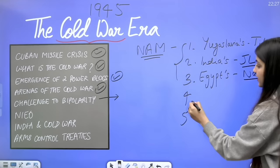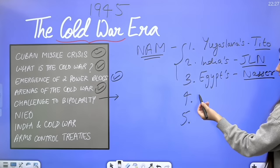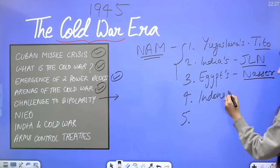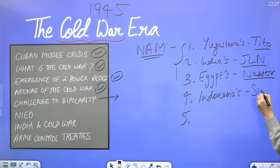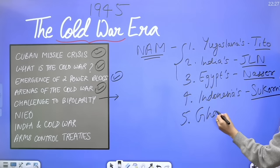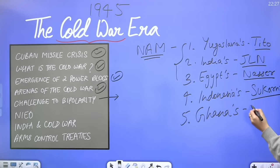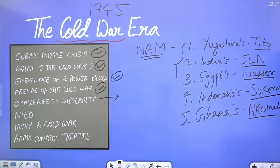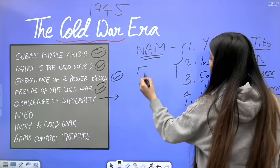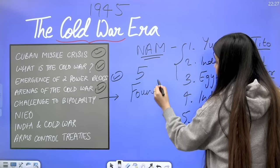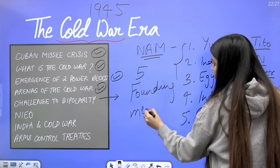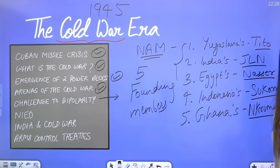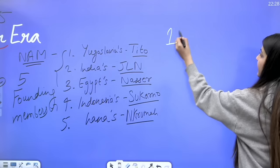Two additional founding members were Indonesia's Sukarno and Ghana's Kwame Nkrumah. These are the five founding members of NAM — their names are very important to know. The first NAM Summit was held in 1961 in Belgrade.